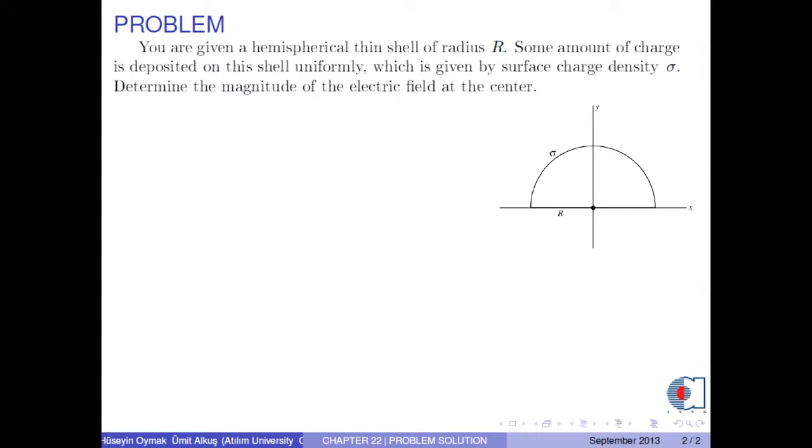You are given a hemispherical thin shell of radius R. Some amount of charge is deposited on this shell uniformly, which is given by surface charge density sigma. Determine the magnitude of the electric field at the center.